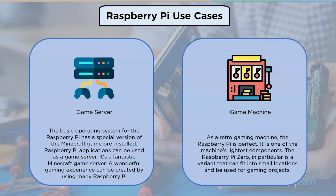Game machine. As a retro gaming machine, the Raspberry Pi is perfect. It is one of the machine's lightest components. The Raspberry Pi Zero in particular is a variant that can fit into small locations and be used for gaming projects. The Raspberry Pi may also be used to restore many popular 16-bit game systems.